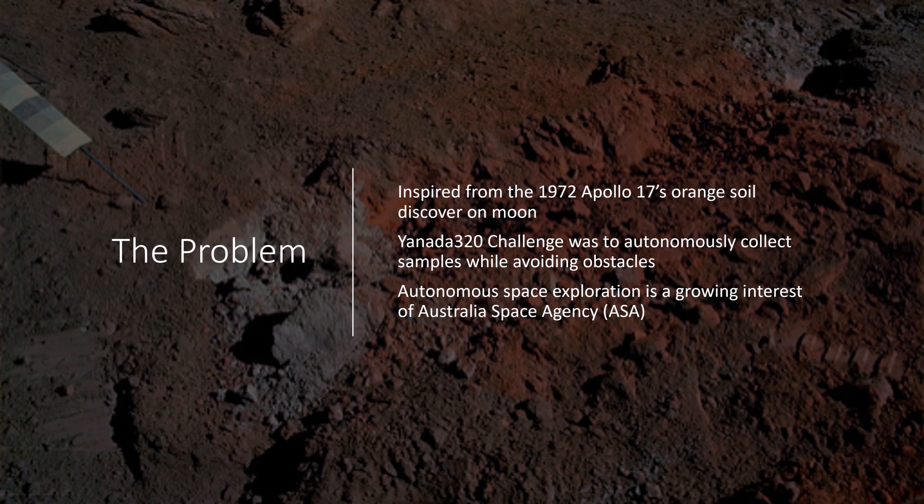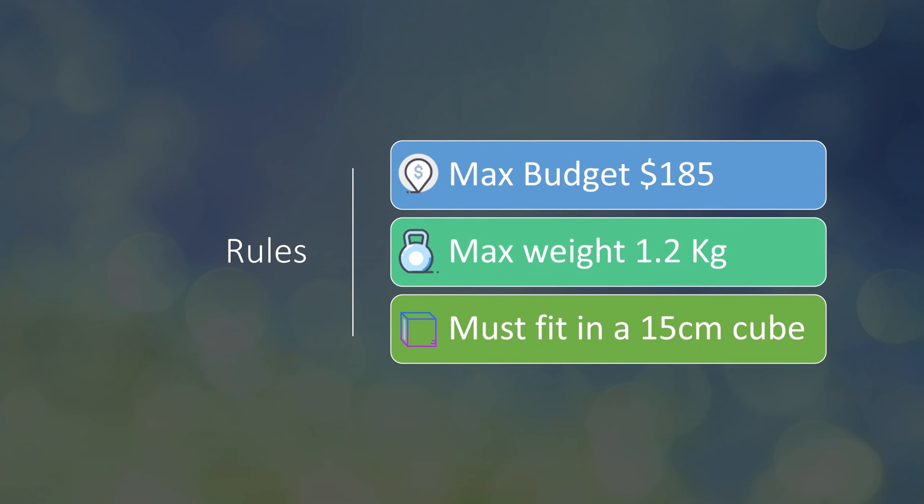The challenge also poses additional constraints relating to space travel. The robot must not cost more than $185 Australian dollars, it must not weigh more than 1.2 kilograms, and the entire assembly must fit within a U1.5 cube, a 15 by 15 by 15 centimeter cube.